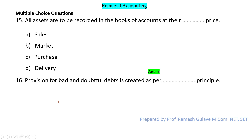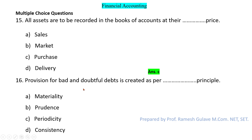The next question says: provision for bad and doubtful debts is created as per dash principle. We create provision for bad and doubtful debts as per the prudence principle. Prudence and conservatism are the same principle. As per this principle, we anticipate losses and make provisions for them, but do not anticipate profits. That is why we make provision for bad and doubtful debts. So here option B is the right answer.